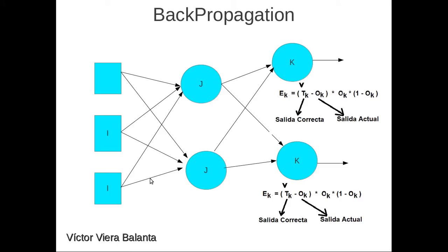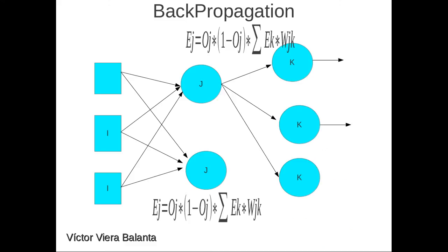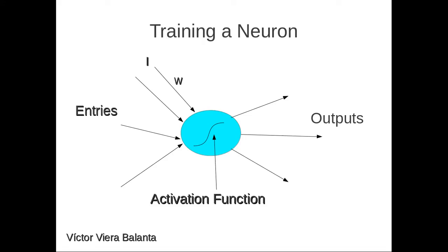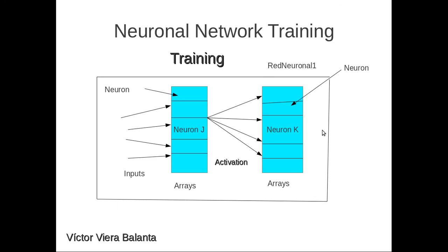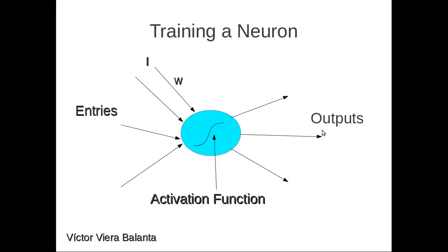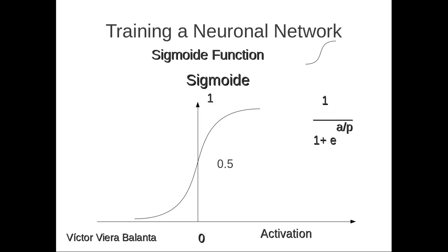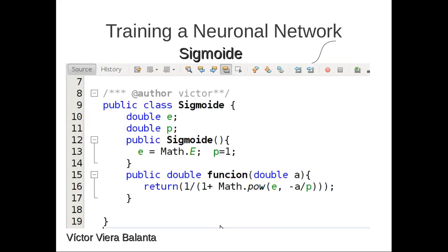Backpropagation algorithm. This is the backpropagation algorithm. This is the activation function. In this function, we have inputs and outputs. Sigmoid function. And this is the program of sigmoid function in Java.